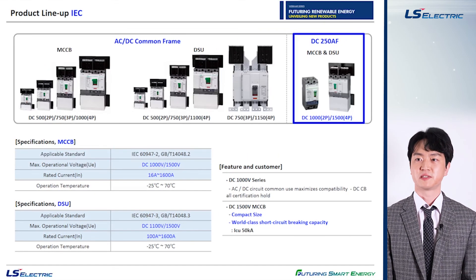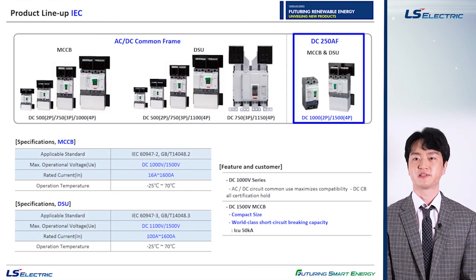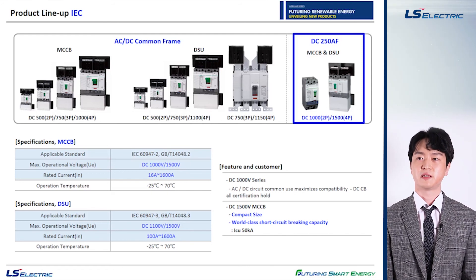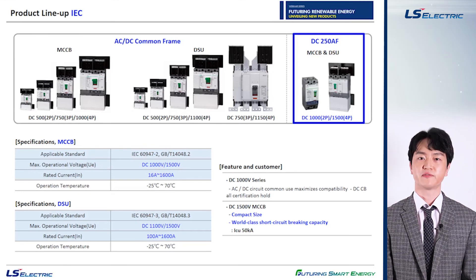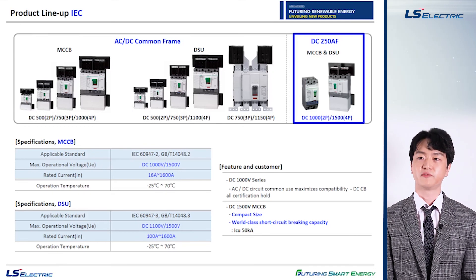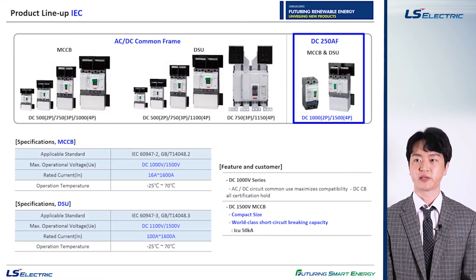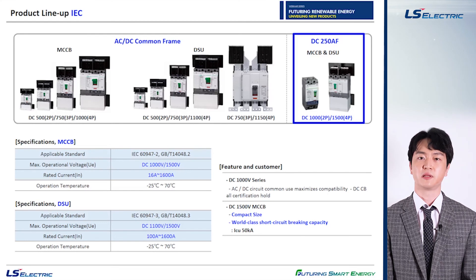Apart from the items mentioned in the previous slide, the IEC certified DC MCCB and MCS types are also available. Especially our 250 ampere frame 1500 DC volts breaker with a compact size will be an appropriate and suitable solution for PV power plants with capacity below 500 kilowatts.